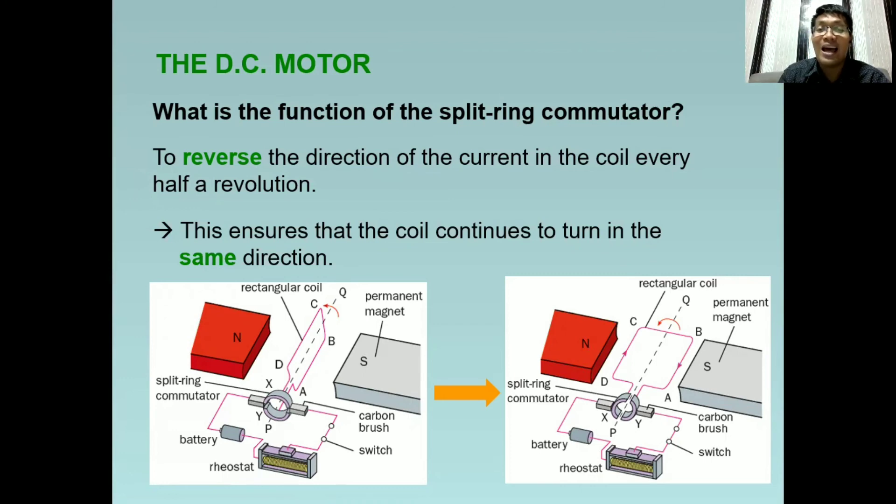As this coil is turning, the appliances or battery operated toy will move. What is the function of carbon brushes? They are directly connected to the commutator and constantly rubbing onto it. They are directly connected to the battery. Carbon brushes ensure that the current can pass through the coil.